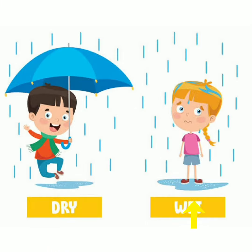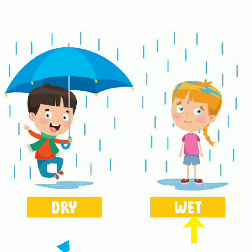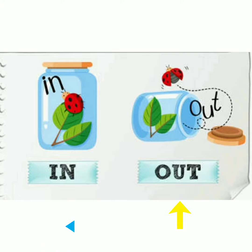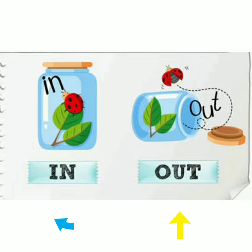Next is dry and wet. Dry yani sukha, wet yani gila. Next, in, out — yani andar, bahar.